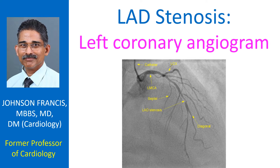Left coronary angiogram showing tight stenosis of distal left anterior descending coronary artery, just prior to its bifurcation into a terminal diagonal. There is mild stenosis of the parent LAD in both distal and proximal regions. Multiple septal and diagonal branches are seen originating from the LAD, which appears to be a type II vessel reaching up to the apex, though the distal most part is not very clear in this image.